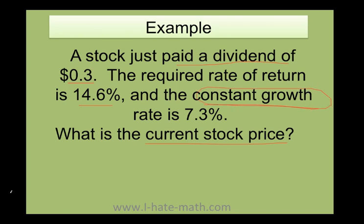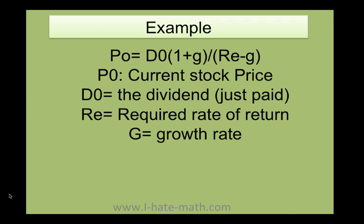So what formula should I use? Very easy. You're going to use this formula. P sub 0, that means the current stock price today, and that's the reason why you have a sub 0, equals the dividend that they just paid you times 1 plus the growth rate. Because actually the formula, this piece right here equals D1, that means the dividend in the first year, divided by the required rate of return minus the growth rate.